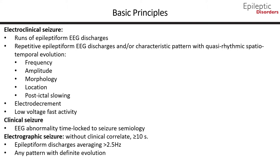An electroclinical seizure may also be associated with post-ictal slowing that could be either focal or generalized. Two other short-duration, less than 10 seconds, EEG seizure patterns are electrodecrement and low-voltage fast activity seen during clinically apparent epileptic seizures.